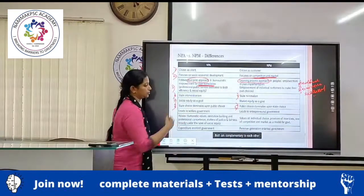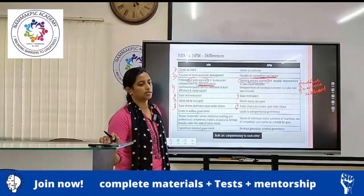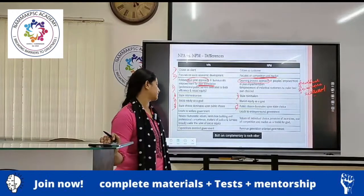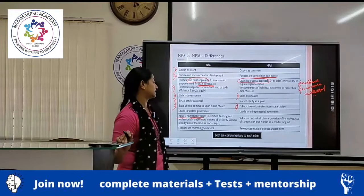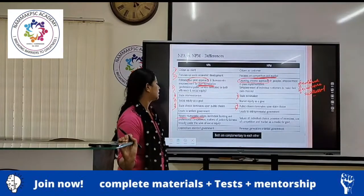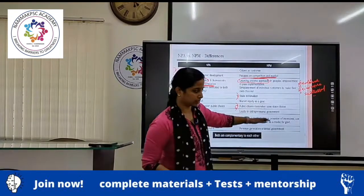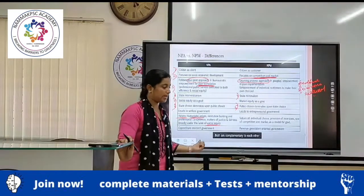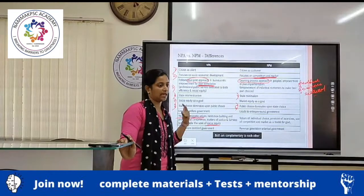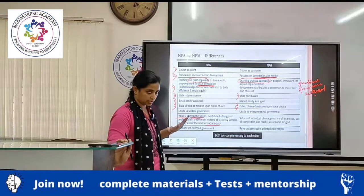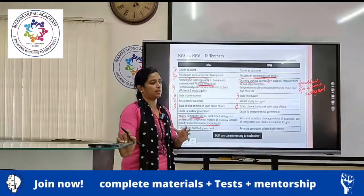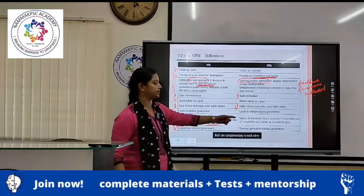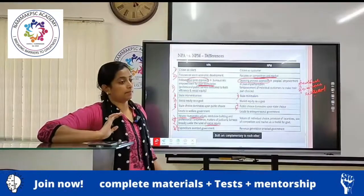State choice dominates in NPA, whereas public choice dominates in NPM. This leads to a welfare government under NPA, and an entrepreneurial government under NPM. Entrepreneurial is more towards innovation, change, and development, while welfare is more towards giving equal access to everybody. The values involved in NPA are humanistic values — institution building, professional competence, justice and fairness, broadly under the label of social equity. In NPM, the values are individual choice, provision of incentives, use of capital, and use of competition and market as a model for government. NPA is expenditure-oriented while NPM is revenue-oriented, and both are complementary to each other.